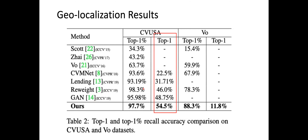We evaluate our method on two standard benchmark datasets: CVUSA and the VO dataset. CVUSA contains panorama street view images and the VO dataset contains cropped street view images. The results show that our method consistently outperforms other approaches at top-1% recall accuracy and top-1 recall accuracy, and this is consistent for the VO dataset as well.